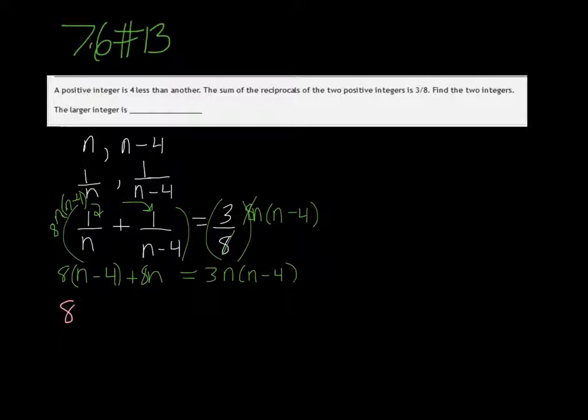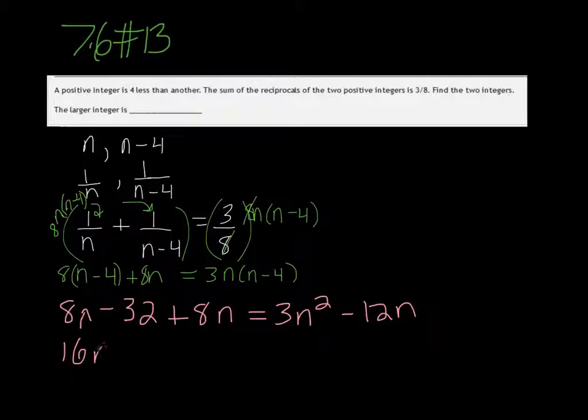So we get 8n minus 32 plus 8n equals 3n squared minus 12n. 8n and 8n is 16n minus 32 equals 3n squared minus 12n.